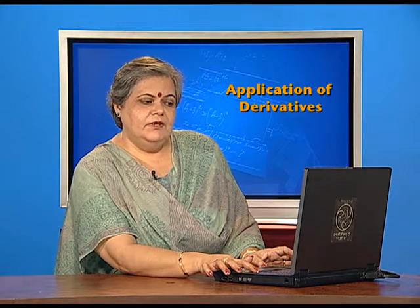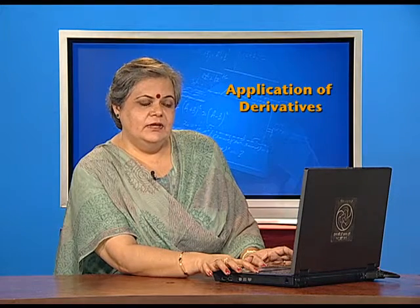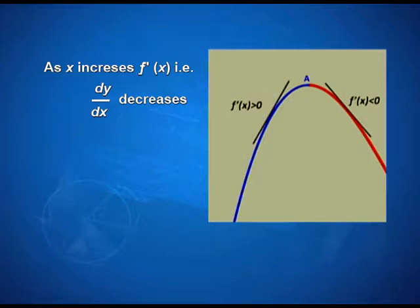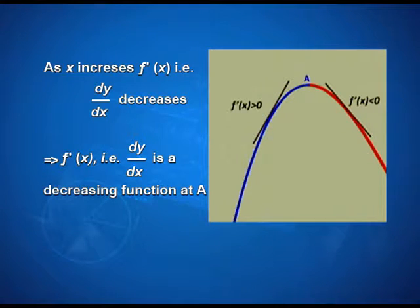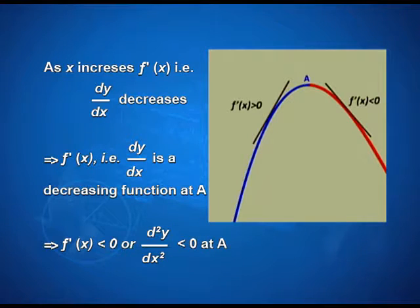Getting back to this graph: at point A, f'(x) on the lesser side of x equal to A is positive, and on the other side it is negative. This can be interpreted as saying that as x increases, f'(x) — that is dy/dx — decreases from positive to negative, which means that f'(x) is a decreasing function at A. In other words, it is the same as saying that the second-order derivative must be less than 0 at A, which was the condition for a function to be decreasing at a particular point.